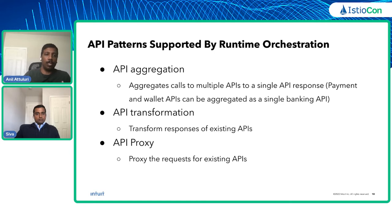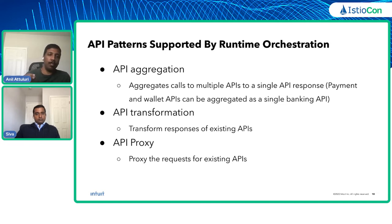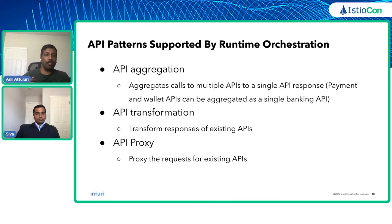We have talked about the two bullet points we are aiming at for the low code, no code solution: the declarative approach using the OpenAPI 3 specification for orchestration, and defining the runtime semantics — aggregation, transformation, and proxy — putting them into the declarative description. Now Siva is going to talk about the other two: generating the runtime manifest for orchestration, and generating dynamic routing rules. He's also going to show a demo of this working. Siva, back to you.